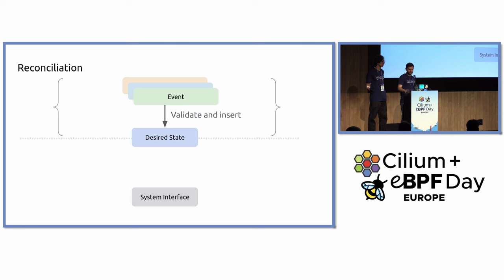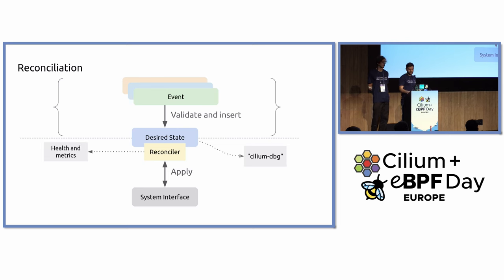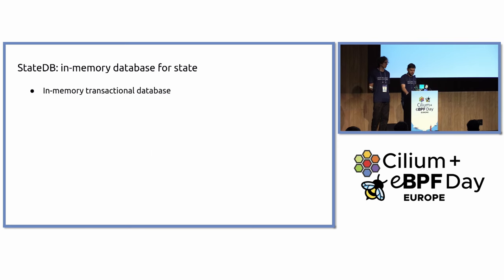Looking at the architectural picture, the desired state divides things into two parts. On top, the control plane receives events from different sources — API server, cluster mesh, REST API — digests the events, and computes the desired state. On the bottom, we have the part that applies the desired state into the system. Many parts of the agent have been written in this pattern but in many different ways. What we've been exploring is how to unify this and how to get observability out of it — how do we know things are failing, how do we extract health information.